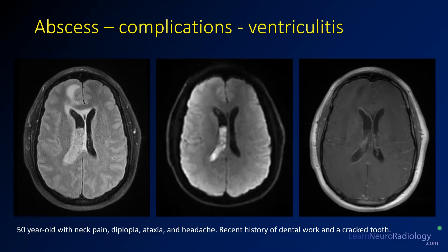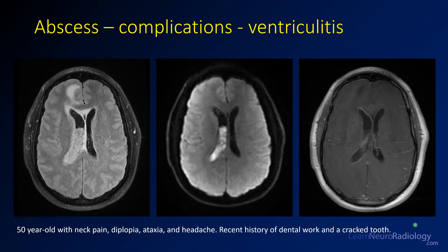As pointed out, you can get ventriculitis, and here you see progression on a later image. The right ventricle is now progressively filled with pus — on FLAIR there's a lot more incompletely suppressed material, very bright on diffusion, and the rim of enhancement has worsened. This patient has gone on to develop a much more flagrant case of ventriculitis.